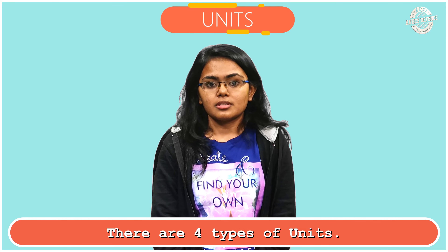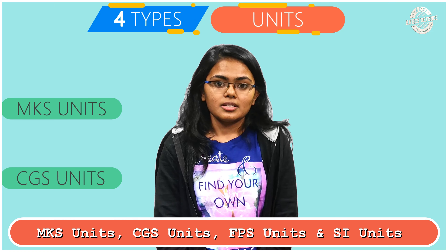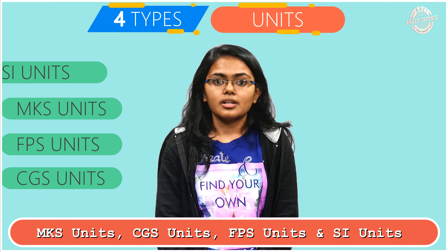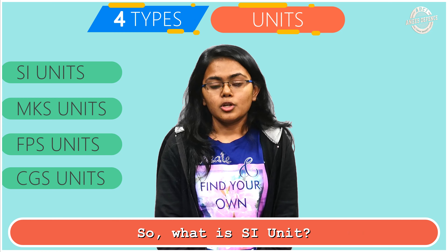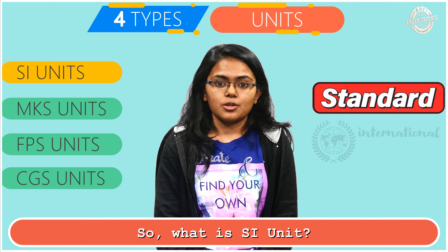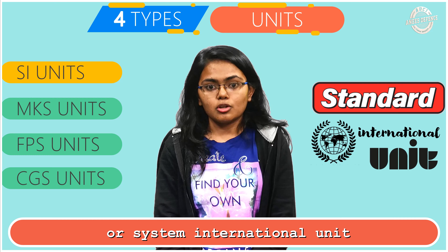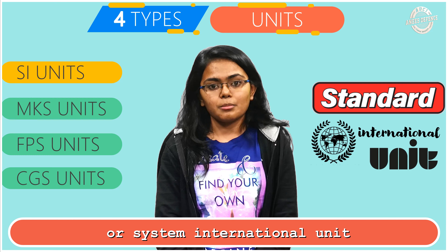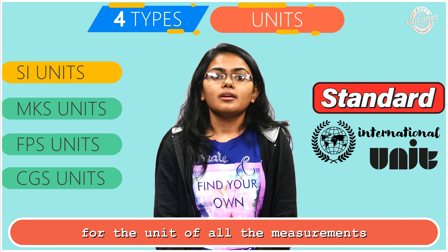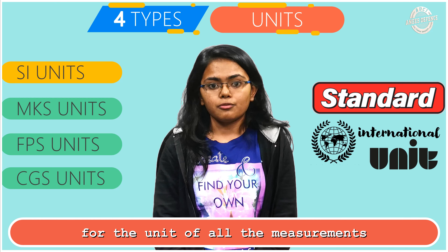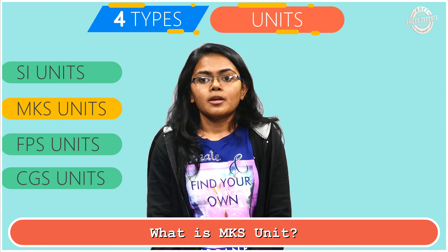Now, units. There are four types of units: MKS unit, CGS unit, FPS unit, and SI unit. SI unit stands for System International — it is the standard international unit for all measured quantities.